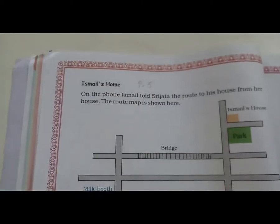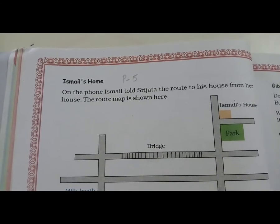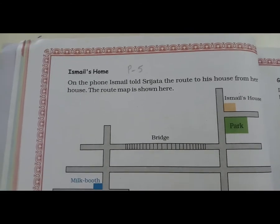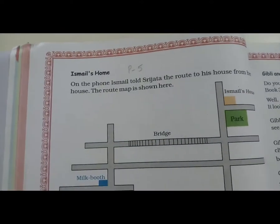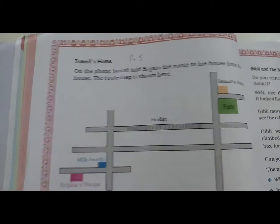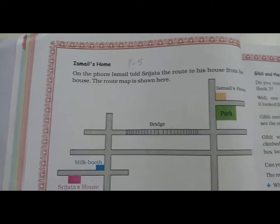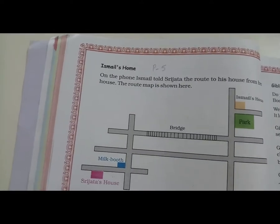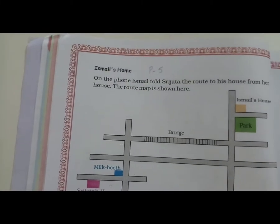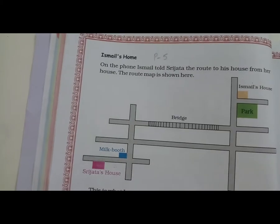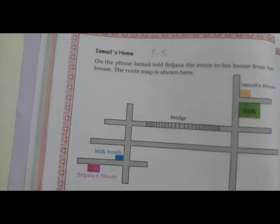On the phone, Ismael told Sujata the route to his house from her house. जब आप स्कूल आते थे, तब आपके घर से निकलते थे और पोटोरिक्सा या वेन में किसी भी जगह से जाते हुए स्कूल तक पहुंचते थे। तो बीच में आपके घर से लेके स्कूल तक बहुत सी places देखने को मिलती होगी — मंदिर, स्टेशन, पार्क कुछ भी। तो हमें यहाँ इस्माइल के घर से सुजाता के घर तक जाना है। So here we talk about the route map.